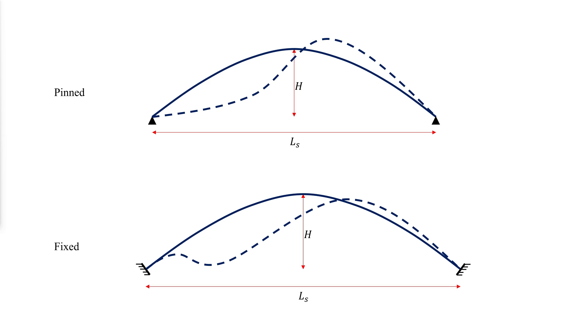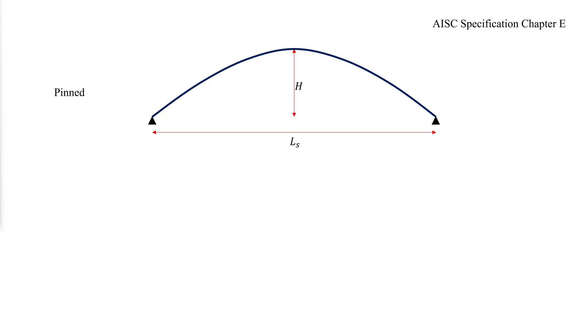The buckling strength can be predicted using the flexural buckling provisions of AISC specification Chapter E with modified effective length factors that consider the effect of curvature. Although the axial load can vary along the arc, the arc member can be designed as a straight column with a uniform axial load throughout its length equal to the maximum load at any section within the arc.